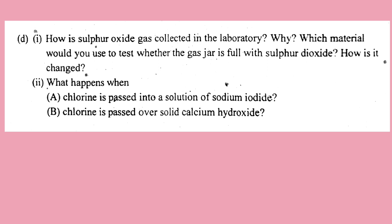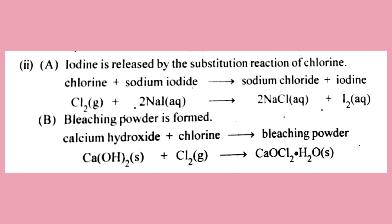A: Chlorine is passed into a solution of sodium iodide — sodium chloride and iodine are formed; this is a displacement reaction. B: Chlorine is passed over solid calcium hydroxide — bleaching powder (chlorinated lime) is formed. Ca(OH)2 solid plus Cl2 gas gives CaOCl2·H2O solid.